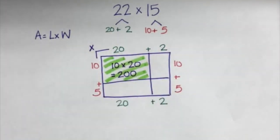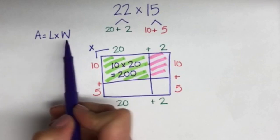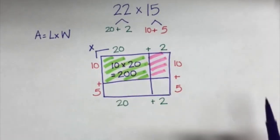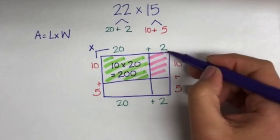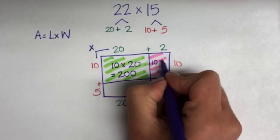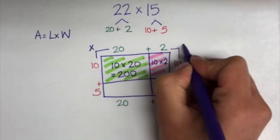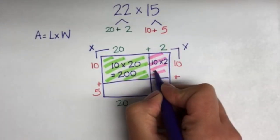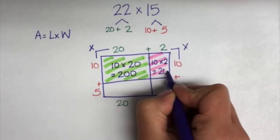We will now move on to our pink shaded box, and we will again multiply our length times our width. In this case, that would be 10 times 2. 10 times 2 is fairly easy to do. I like to connect the corners to remind us of what we are doing inside of our rectangles.